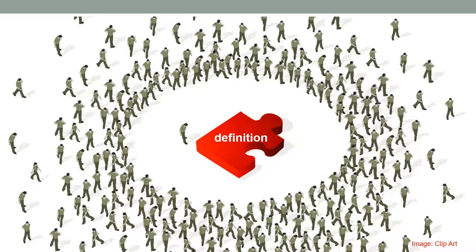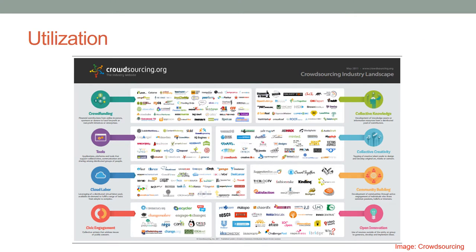Crowdsourcing involves obtaining information or input into a particular task or project by enlisting the services of a number of people, either paid or unpaid, typically via the internet — collaborating with the people who used to be the silent audience to make something better than you could make alone. Crowdsourcing has three main components: requester (people who submit tasks or projects and collect answers), worker (people who work on tasks and provide answers), and platform (the program used for publishing and managing tasks).